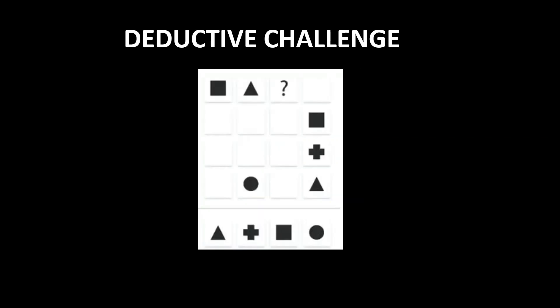In level 2, to identify the missing geometrical figure, you first need to identify the missing figure next to it. Based on the rules discussed earlier, you have a triangle and a plus square, so the missing geometrical figure there is a circle. Once you have identified that as a circle, you have a triangle, square, and a circle — so the missing geometrical figure in the remaining cell is a plus symbol.